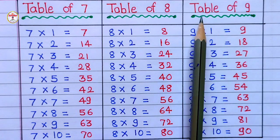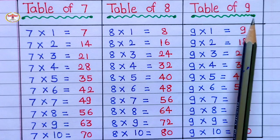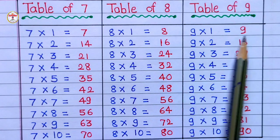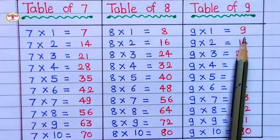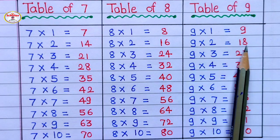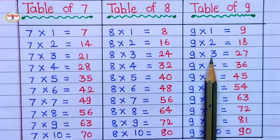Table of 9: 9 1's are 9, 9 2's are 18, 9 3's are 27.